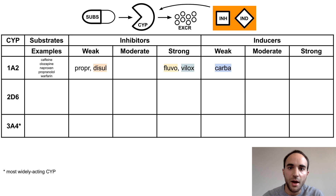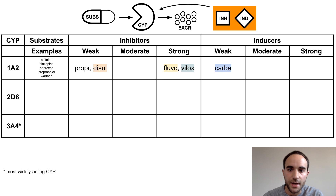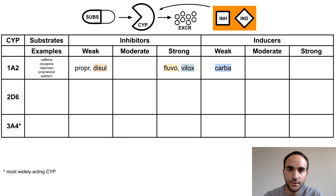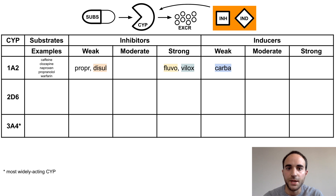First is CYP1A2. Weak inhibitors of this enzyme are propranolol and disulfiram, while strong inhibitors are fluvoxamine and viloxazine. Weak inducers include carbamazepine. Note that some psychotropics are highlighted here — these are the ones that affect more than one CYP enzyme and therefore have many drug-drug interactions.